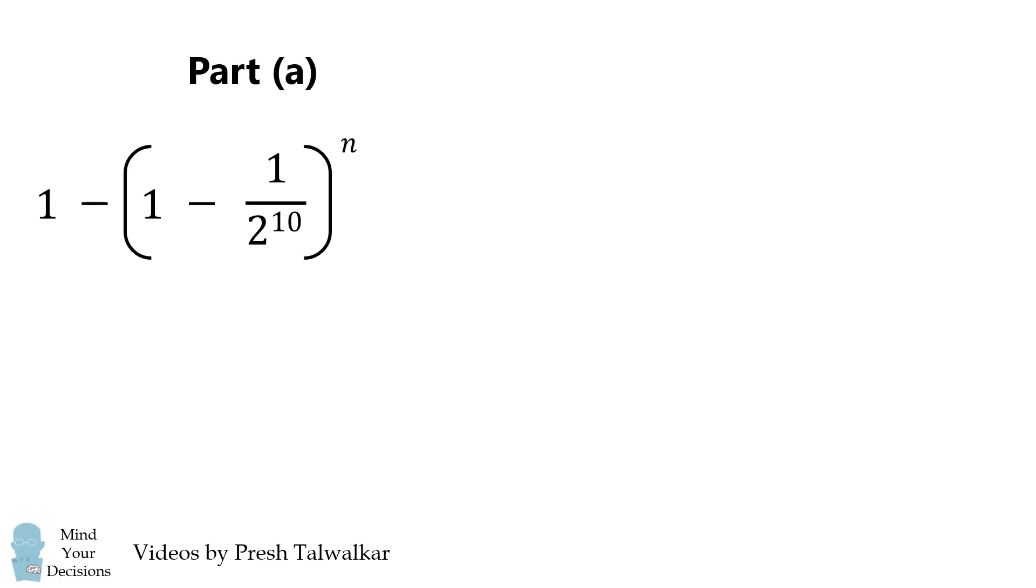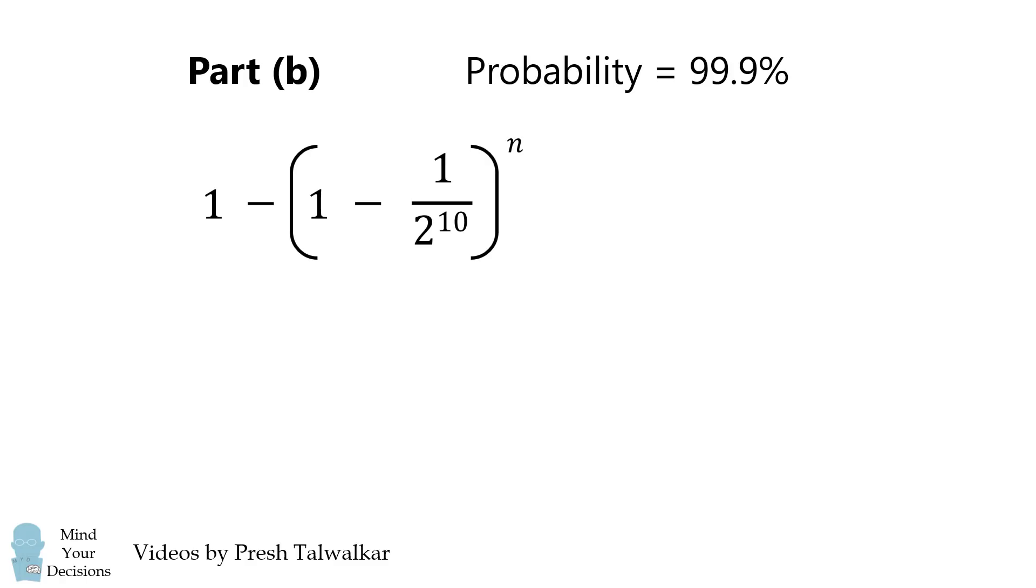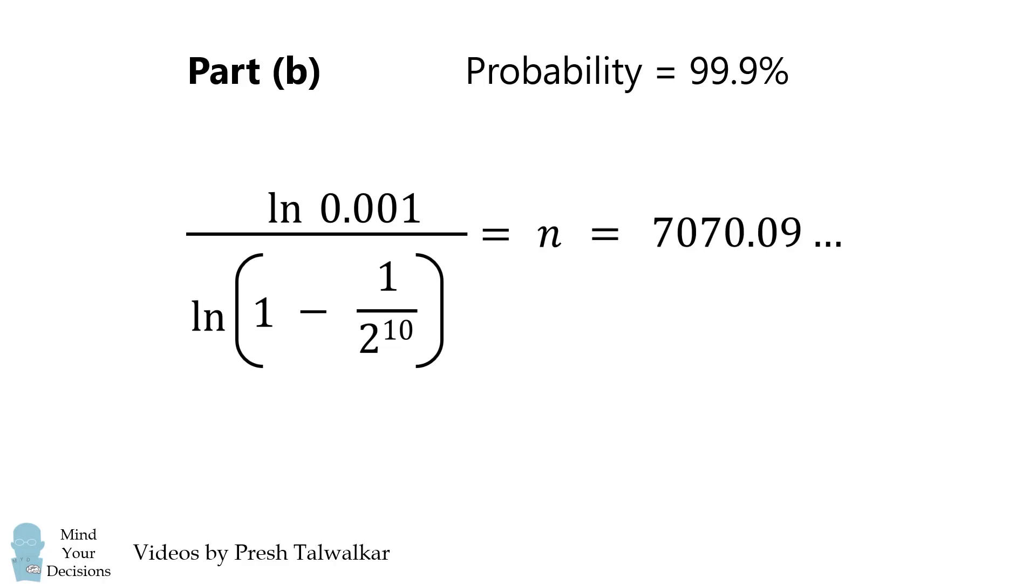So how large must n be to get to 99.9%? We'll set this equation equal to 99.9%. We'll then rearrange this equation and simplify. We then take natural logs on both sides, and bring the exponent down. We then solve for n, and then simplify to get n is equal to 7070 and some fraction apart.